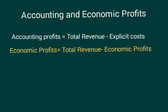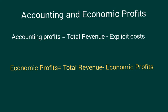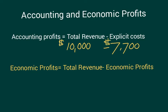Let's take a look at a numerical example, starting with accounting profits. Let's say that the firm's total revenue equals $10,000 and the explicit costs for the firm equal $7,700 — these are all monthly expenses. That would mean the firm has a total accounting profit of $2,300.